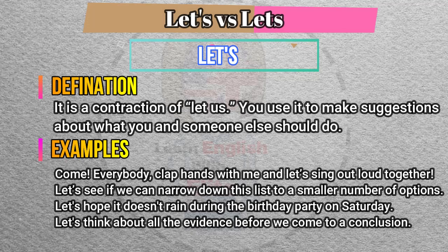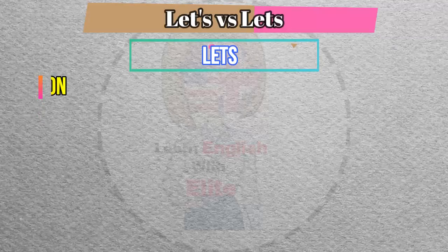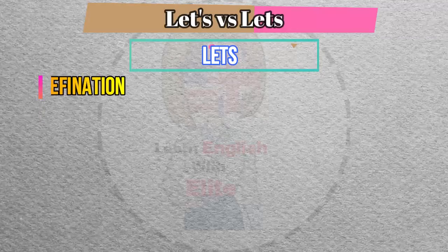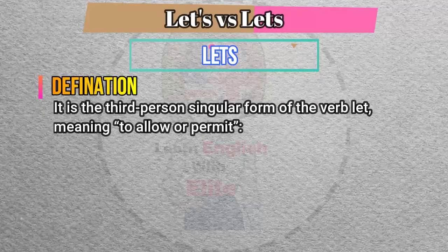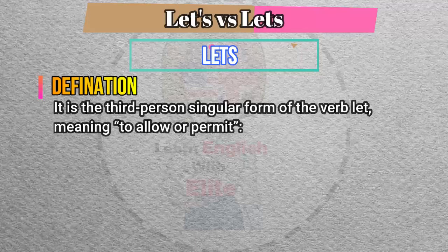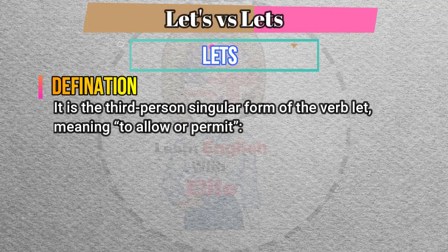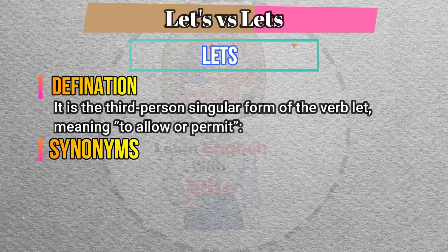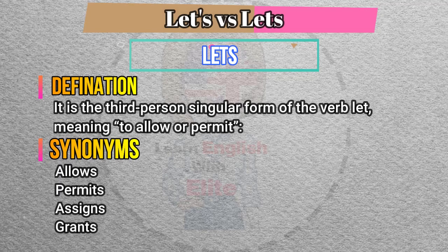Now let me define the second word: lets. The definition of lets is: it is the third person singular form of the verb 'let,' meaning to allow or permit.